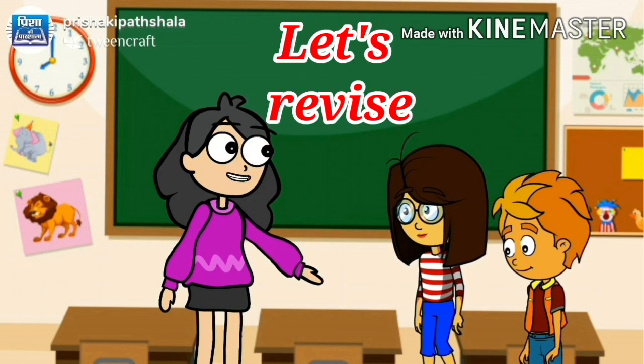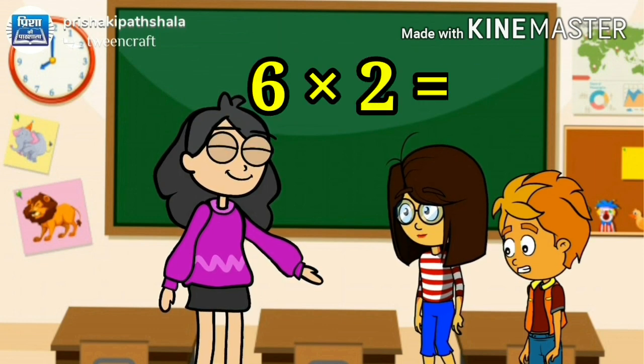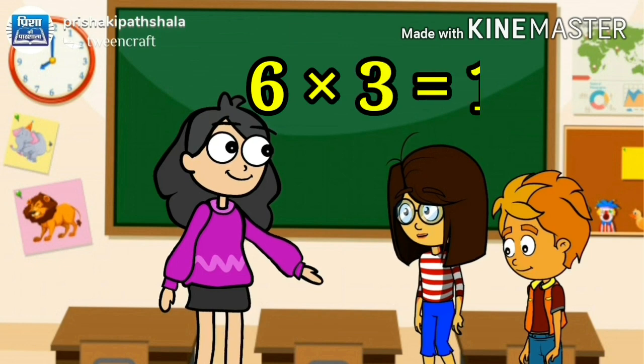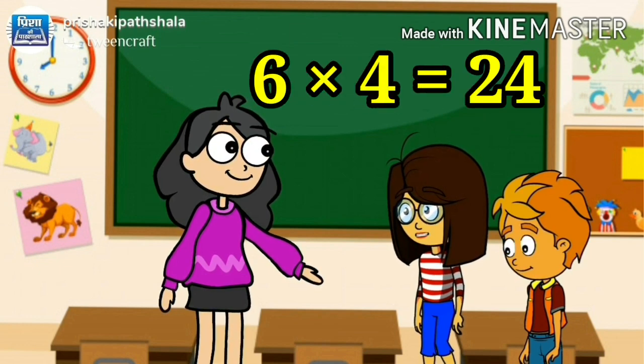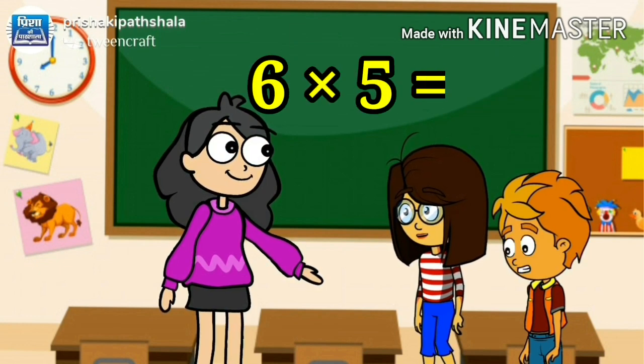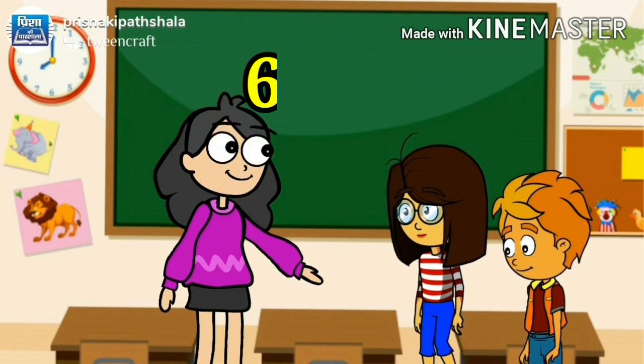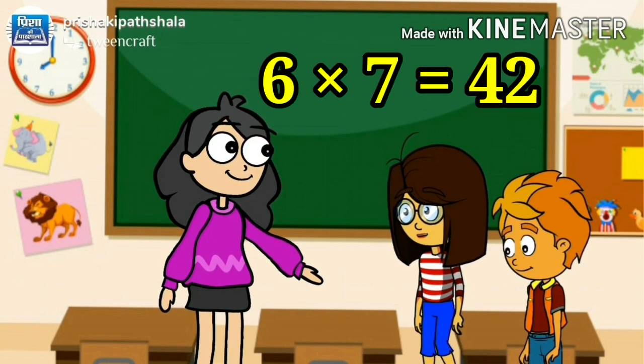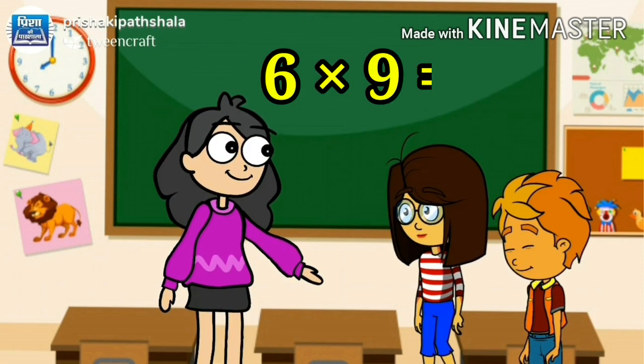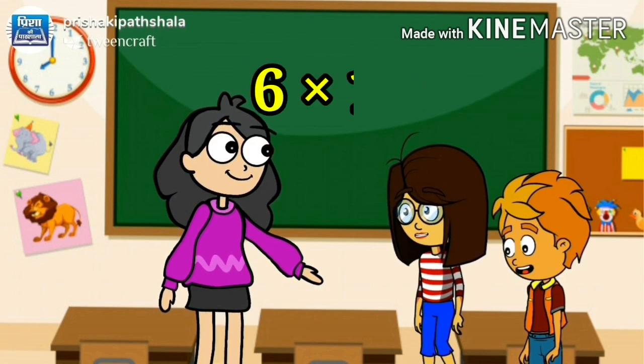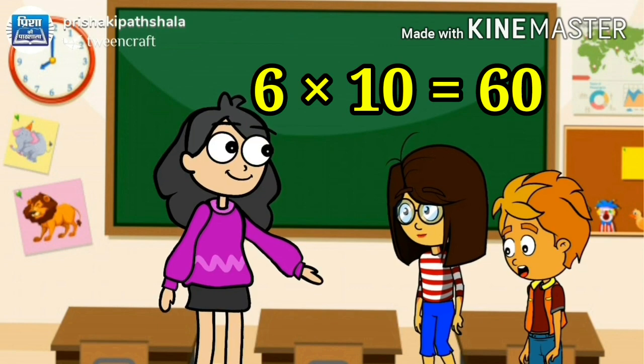Kids, let's revise. 6 1's are 6, 6 2's are 12, 6 3's are 18, 6 4's are 24, 6 5's are 30, 6 6's are 36, 6 7's are 42, 6 8's are 48, 6 9's are 54, 6 10's are 60.